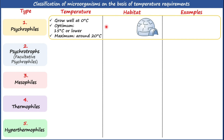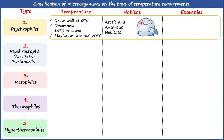Regarding habitat, we can easily isolate psychrophilic microorganisms from Arctic and Antarctic habitats. This is because Arctic and Antarctic habitats are mostly represented by oceans, and 90% of ocean water has a temperature of 5°C, which creates favorable cold conditions to support the growth of psychrophilic microorganisms.